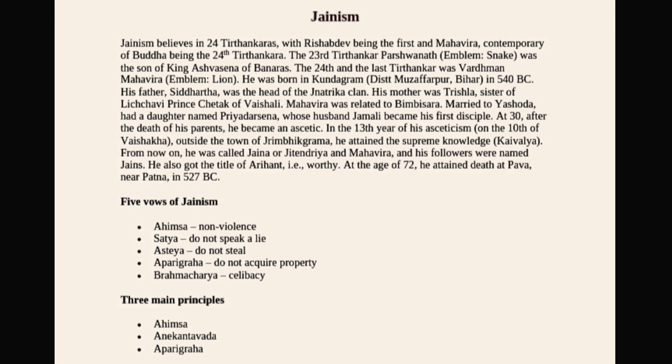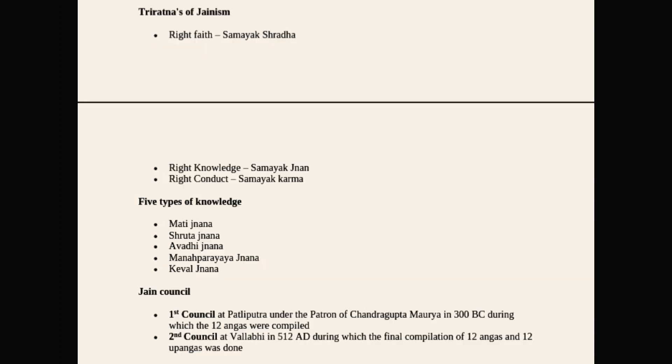The three main principles of Jainism are Ahimsa, Anekantvad, and Aparigraha. Anekantvad is an important concept frequently asked in competitive exams — it is related to Jain philosophy. The three Ratnas of Jainism are right faith (Samyak Shraddha), right knowledge (Samyak Jnan), and right conduct (Samyak Karma).